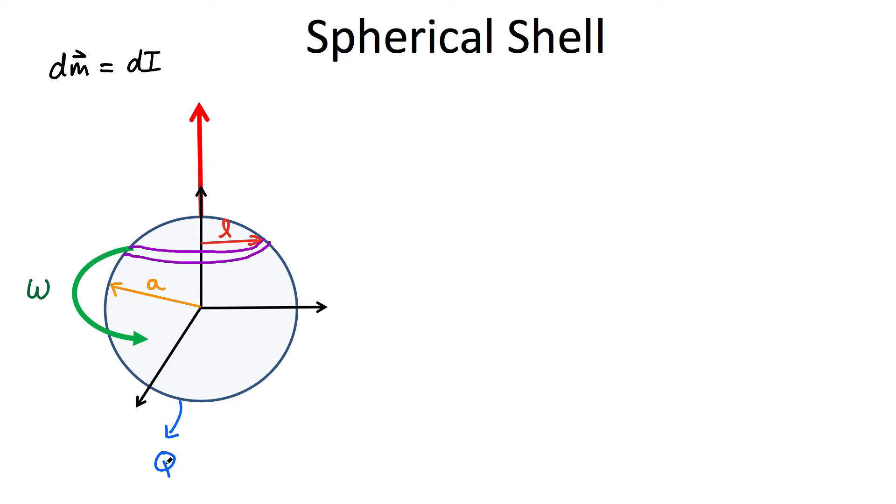So this purple shell has a certain amount of charge on it. It's not equal to the total charge. It's a fraction of that. So it's a small element of charge and it also has some area, some area A. So let's go ahead now and look at each of those terms.